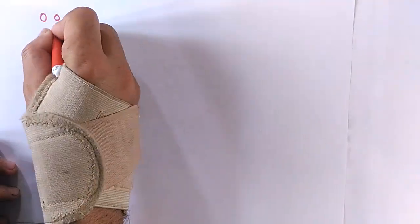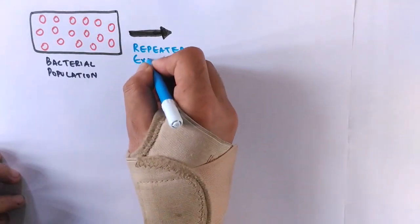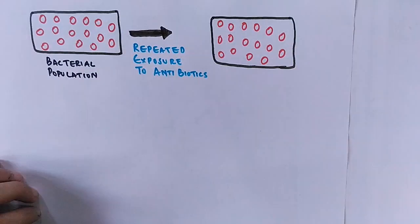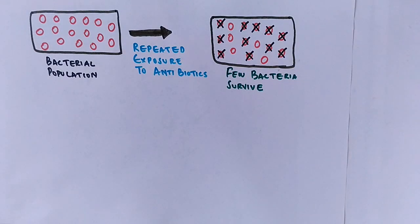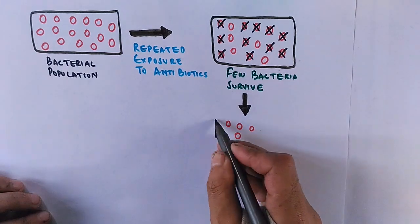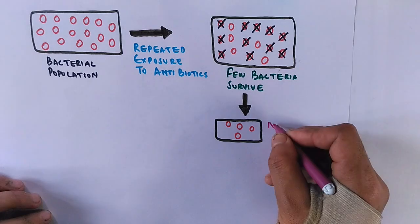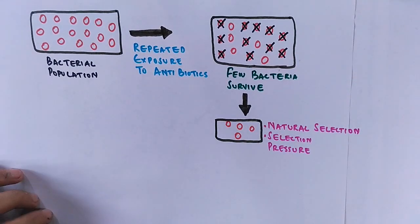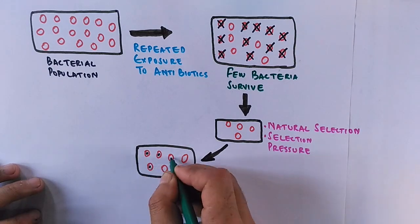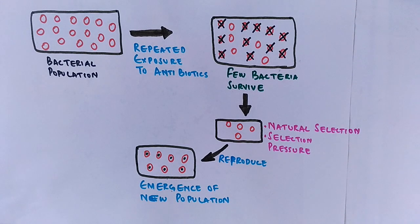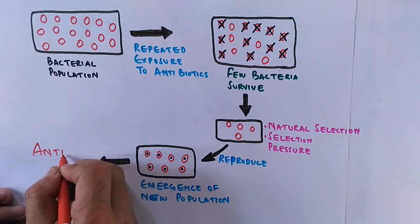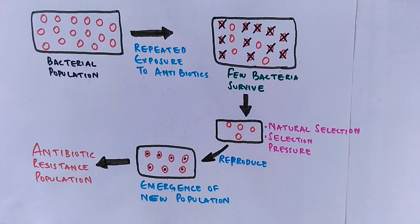Now let's look at antibiotic resistance in graphical representation. We have a bacterial population, and on repeated exposure to antibiotics, only a few bacteria survive — the rest are eliminated. These surviving bacteria undergo natural selection: they carry genes that allow them to resist antibiotics. After natural selection, these bacteria reproduce, leading to the emergence of a new population with resistant genes. This entire new population is now antibiotic resistant. This is how antibiotic resistance works at the population level.